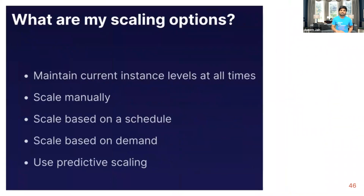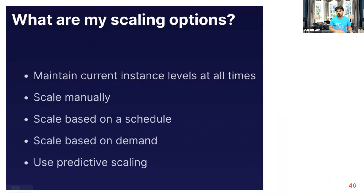Your scaling options include: compute utilization, manual scaling, and schedule-based scaling. For example, a newspaper website — no one reads it at night, so it can scale in and remove unused servers. In the morning it needs more servers to handle readers. You can also scale based on demand, and there's predictive scaling, which is machine learning-based — the machine learns and predicts when peak load comes and scales up or down accordingly.